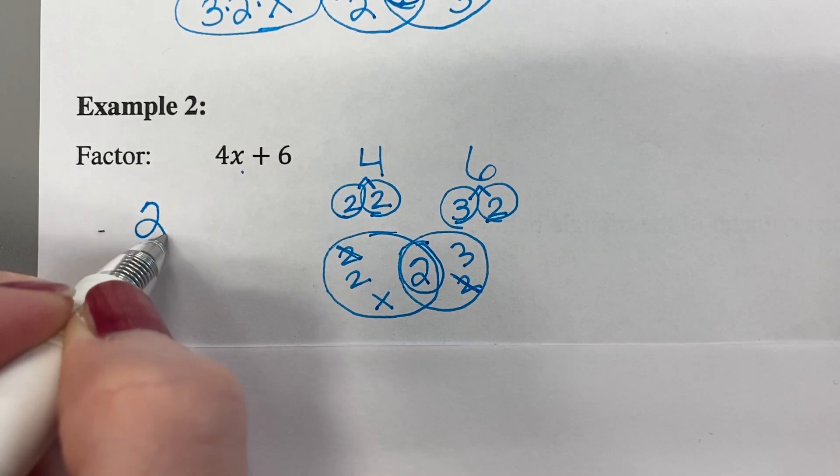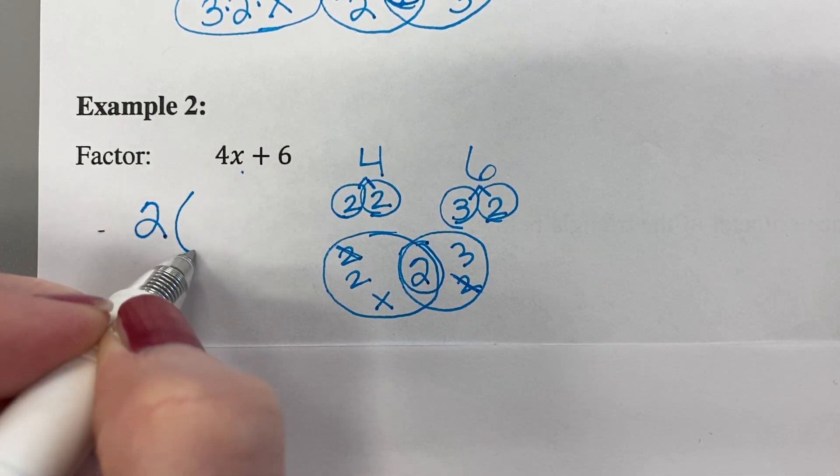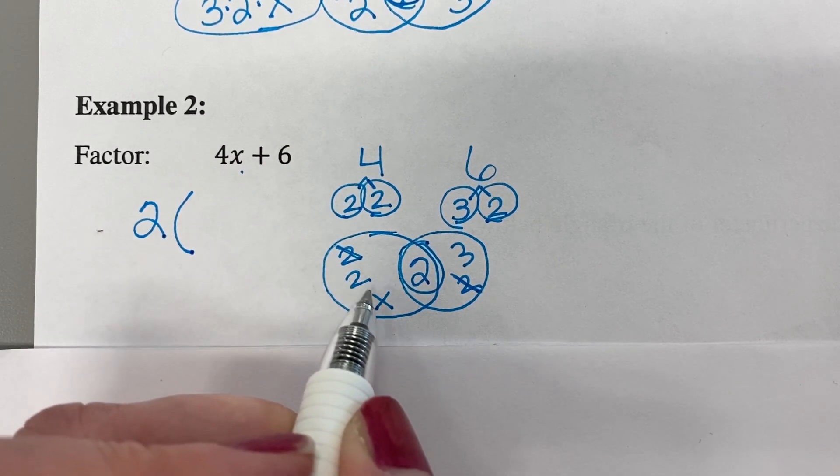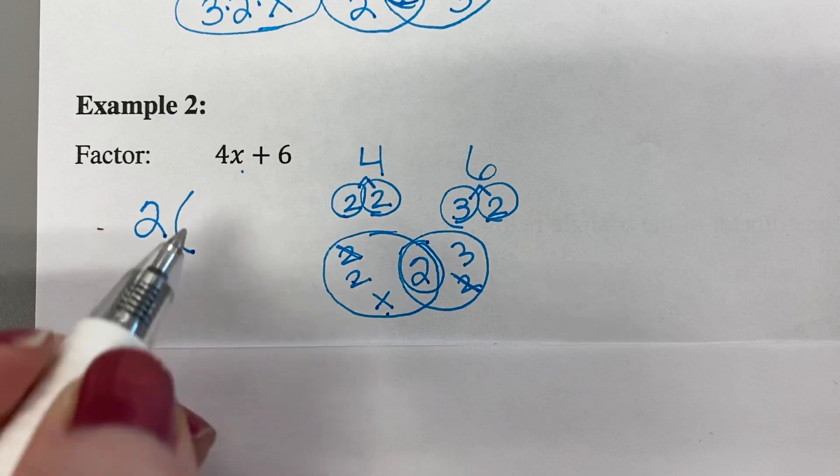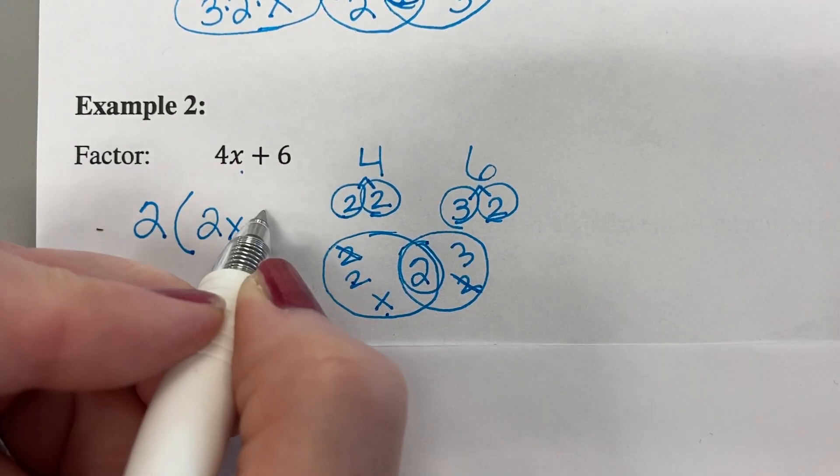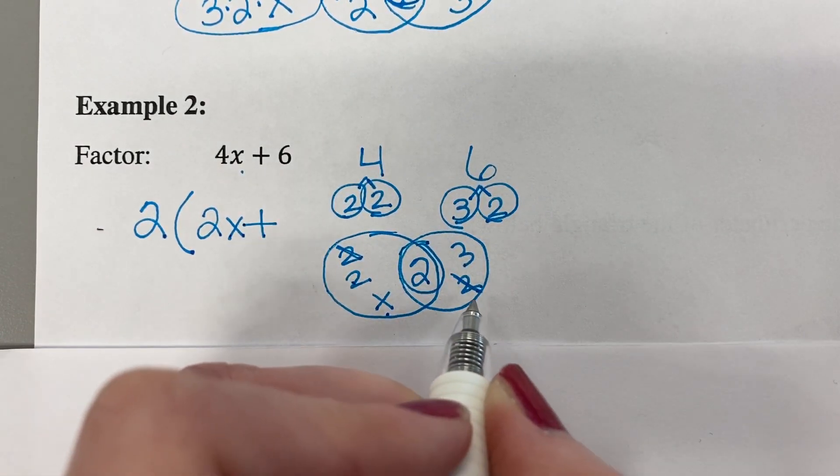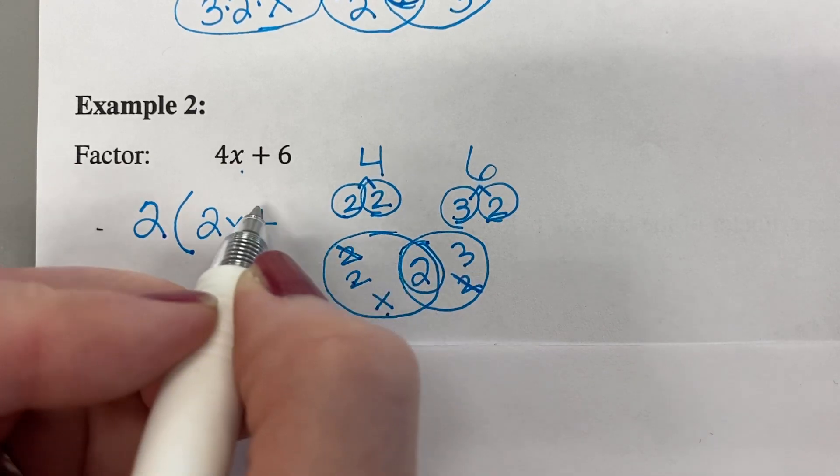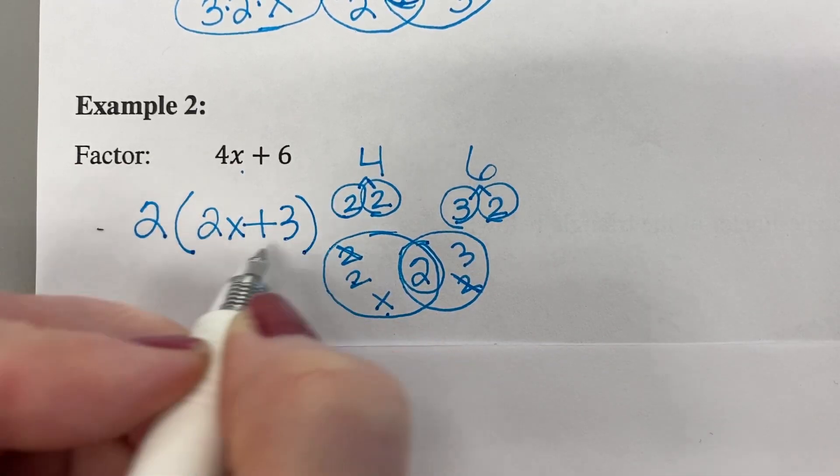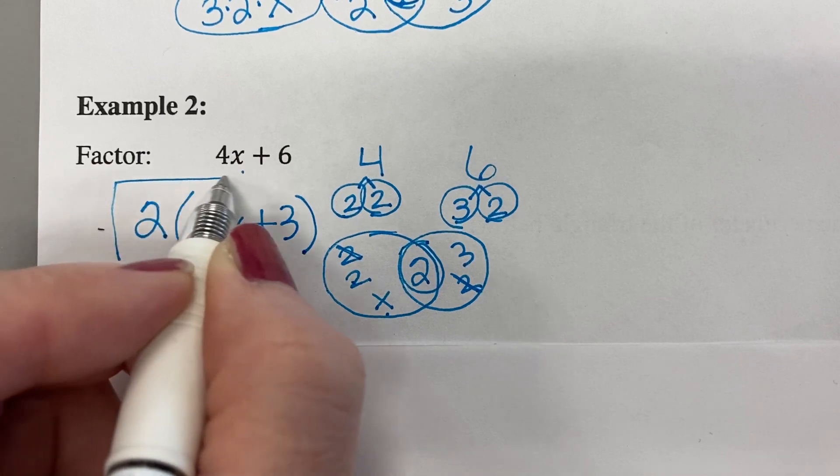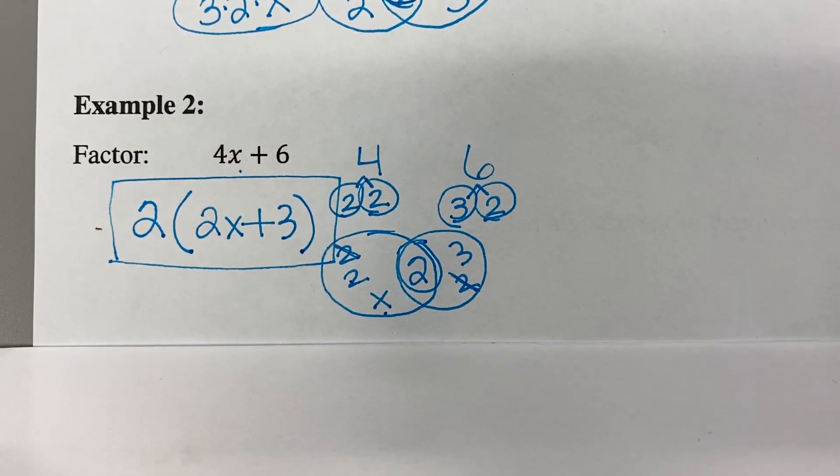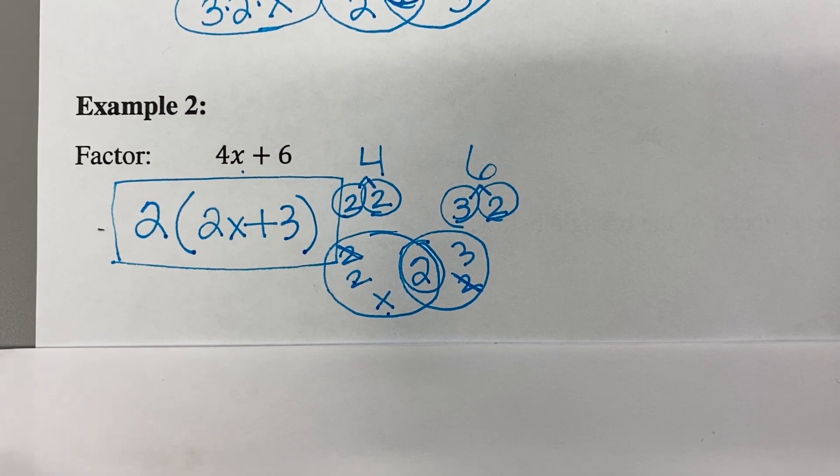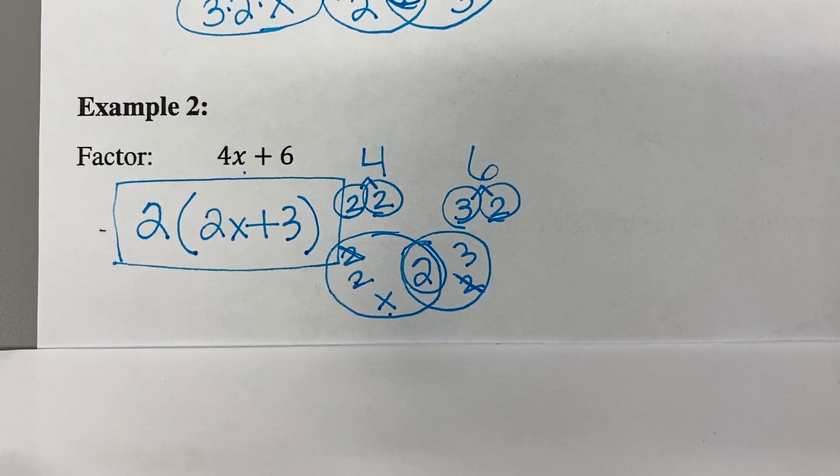That gets written first. We open parentheses. Now we look at the first part of the circle here. What's not crossed off is a 2x. Bring the plus sign down. And what's not crossed off on this side is that 3. And so this is my final answer. 2 times the quantity of 2x plus 3. That's the factored version of 4x plus 6.